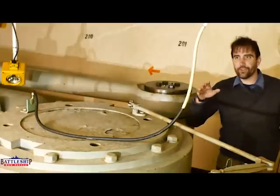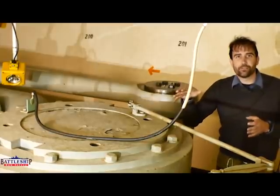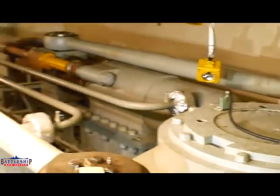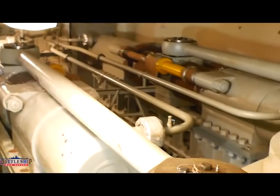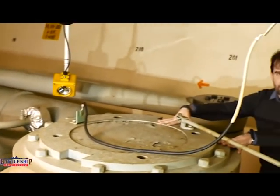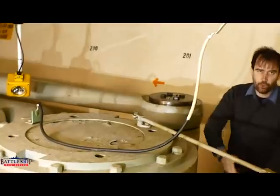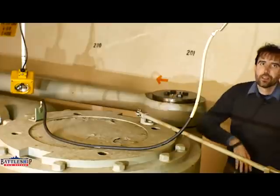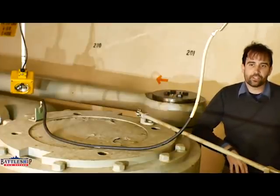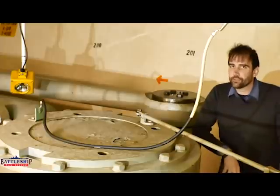First off, we are in the after steering compartment of Battleship New Jersey on the starboard side. So this is the starboard side rudder post with one of our two rudders coming out the bottom here. And these hydraulic rams that you saw in the forward part of these rooms are what are actually turning the rudder left and right.